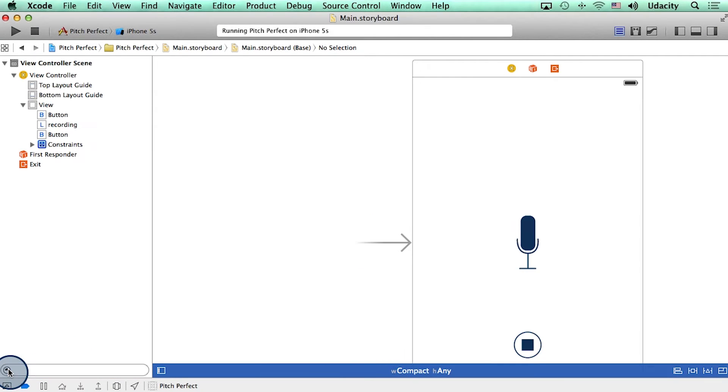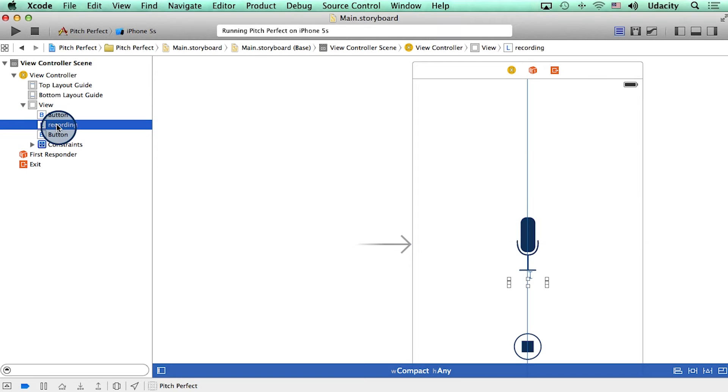If you look at the document outline, you will notice that the microphone button, the recording in progress label, the stop button, they all form a part of our view.